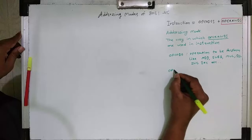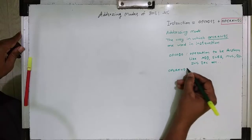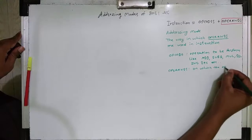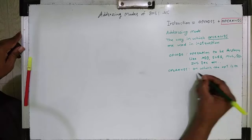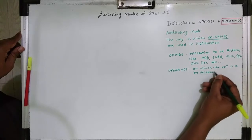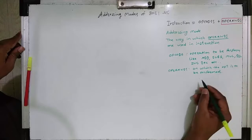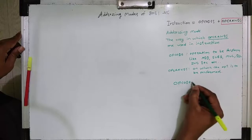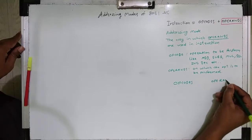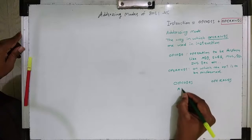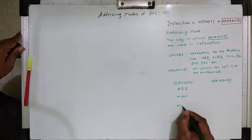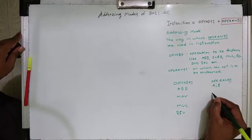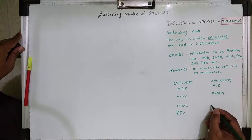Now, operands — what is meant by operands? Operands are the data on which the operation is to be performed. Generally operands consist of memory locations and registers. For example, opcodes like ADD, MOVE, MULTIPLY, DIVIDE act on operands like A,B or A,30H — where 30H is a memory location.